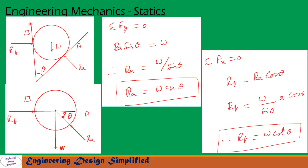Here in this picture, this is a vertical plane and this is the plane at an angle theta with the vertical, and a uniform sphere is resting in between these two planes. Its weight w is acting downwards, and the reaction of this inclined plane on the sphere is perpendicular to this plane — that is Ra.